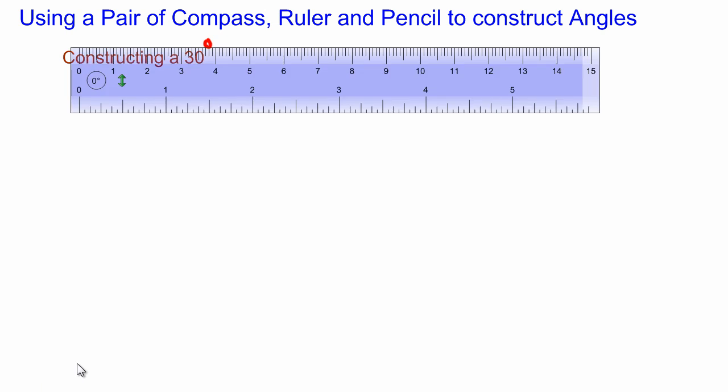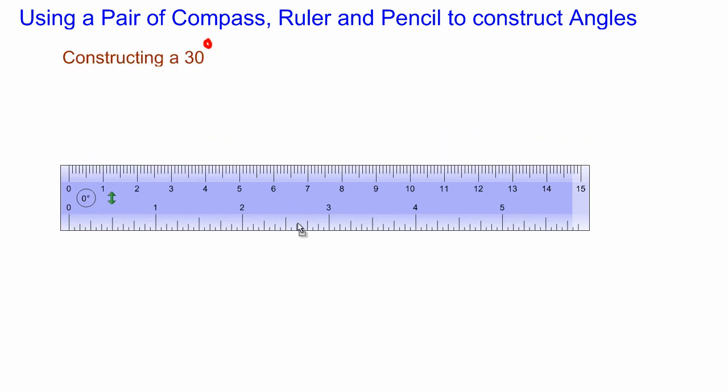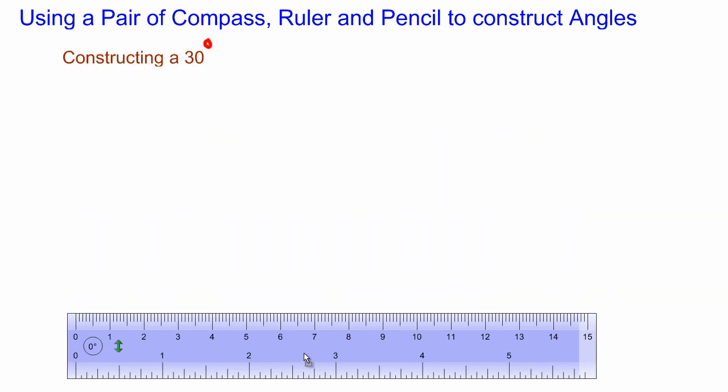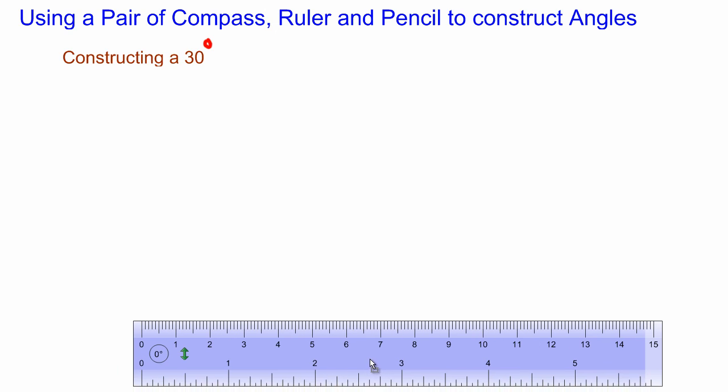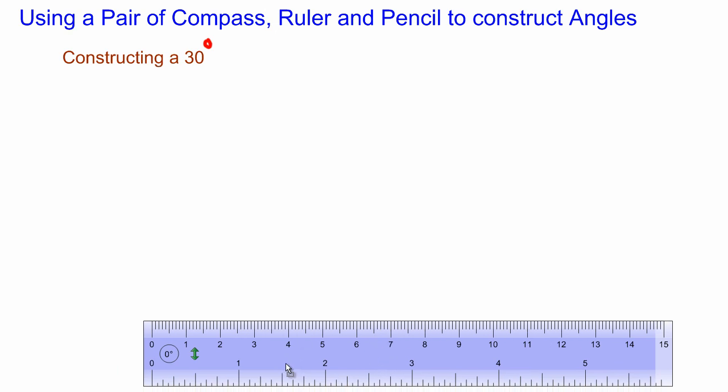Now in this lesson we're going to be looking at how we construct a 30 degree angle. So again, let's take out our instruments. Here's my ruler and let's say we were asked to draw a line segment of 6 centimeters.